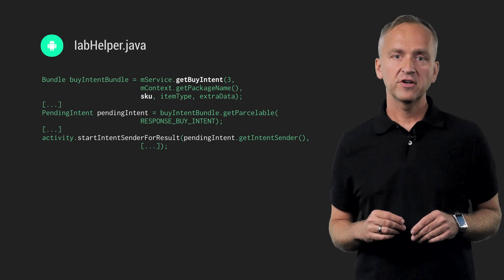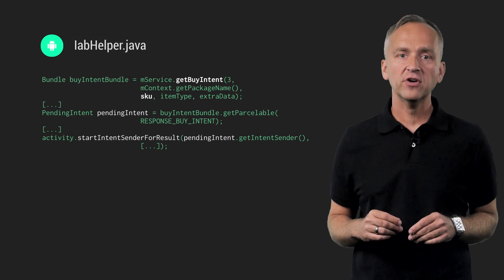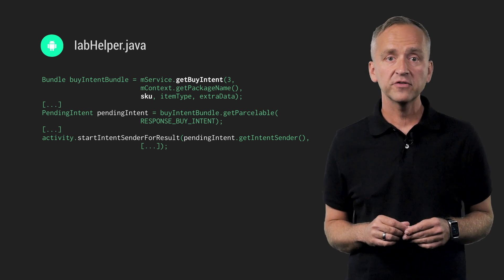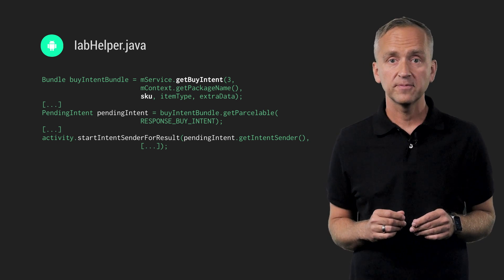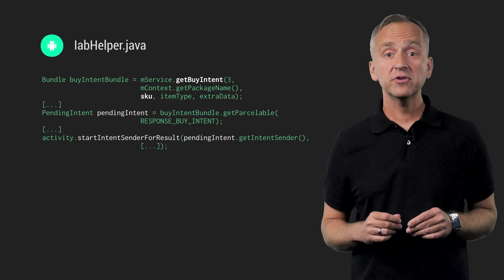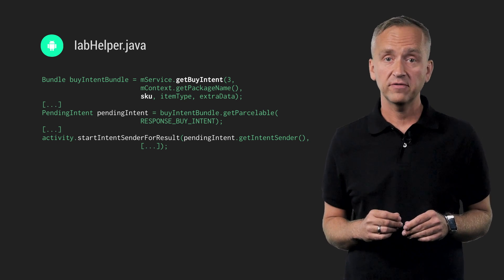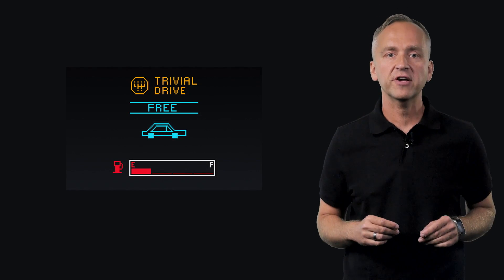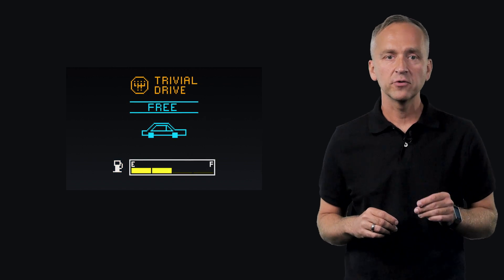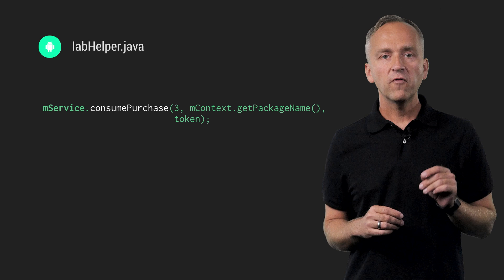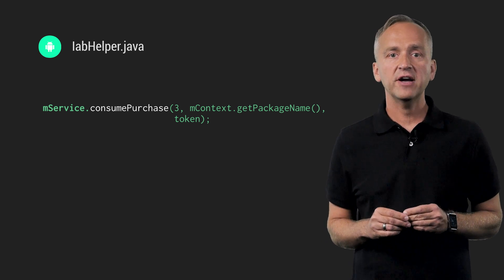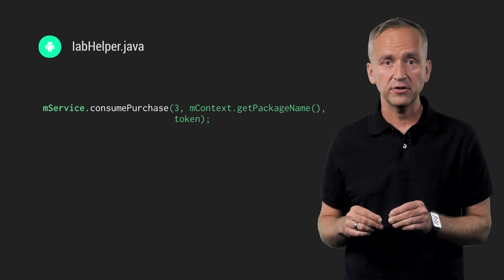To initiate a gas purchase, Trivial Drive constructs a Buy Pending Intent, starts it, and then processes the response in the handleActivityResult method. As you can see, Google Play handles the purchasing flow. At this point, the user is in possession of extra gas, so the app updates the fuel gauge display. Because gas is a consumable product, following the successful gas purchase flow, Trivial Drive also calls the consumePurchase method.